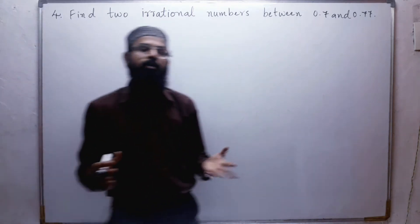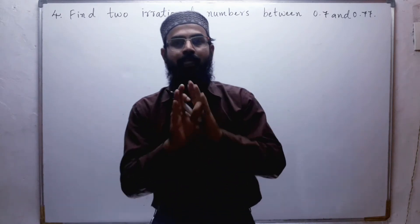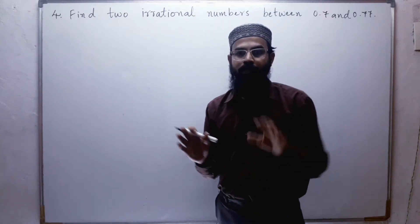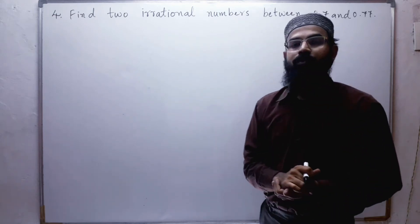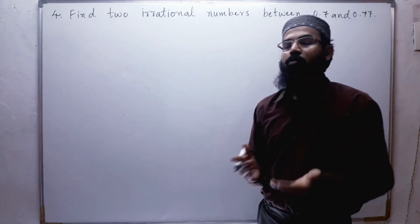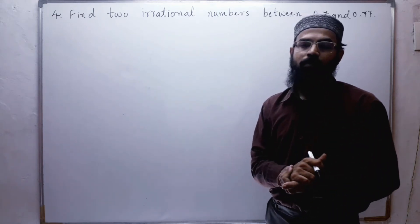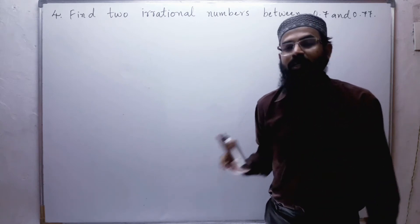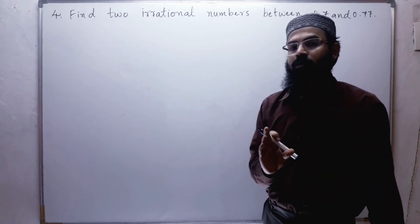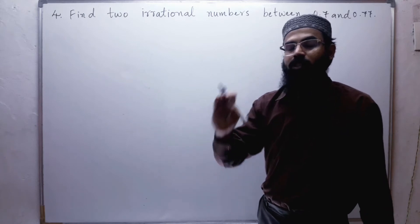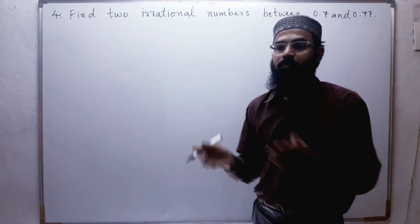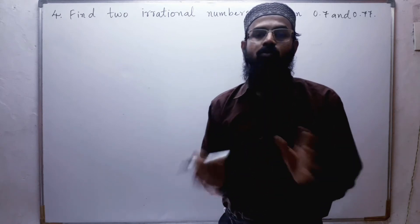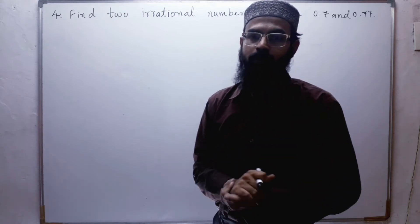So what do you mean by irrational number? A number that cannot be written in p by q form is called an irrational number. The other form is: if any number is non-terminating and non-repeating — that means after the decimal the numbers are not repeating — then that is called an irrational number.